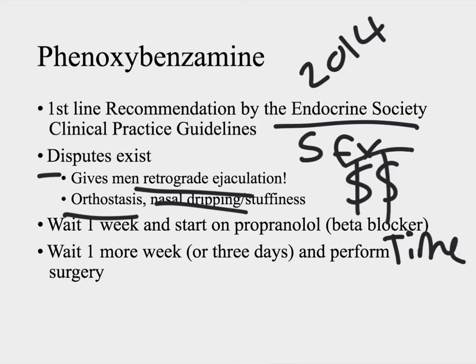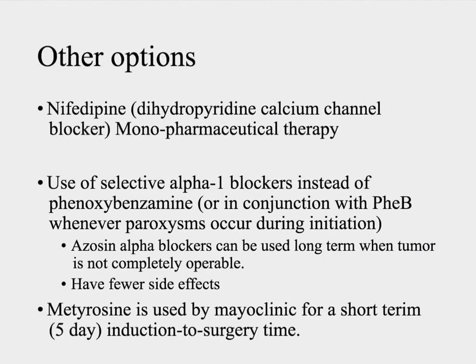The prices of some of these medications have also been in flux. Phenoxybenzamine and metyrosine — which we'll talk about in a minute — those prices have been changing quite drastically recently. So your other options: you can use nifedipine, which is a dihydropyridine calcium channel blocker. This can block calcium channels and cause vasodilation. The non-dihydropyridines — verapamil and diltiazem — will also have a cardiac impact, but the recommendations say to use the dihydropyridine nifedipine.